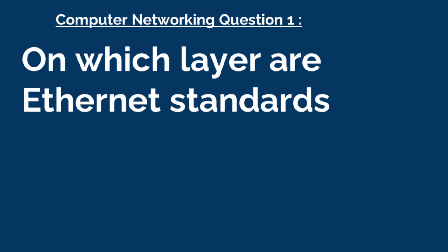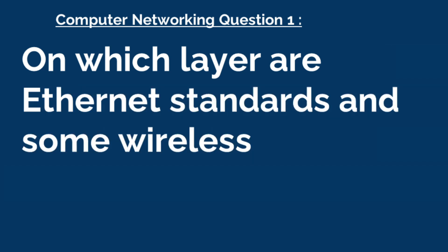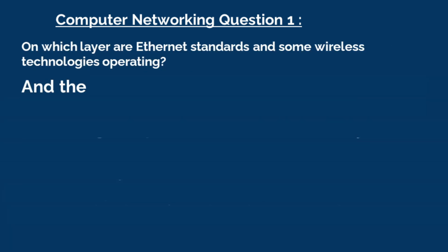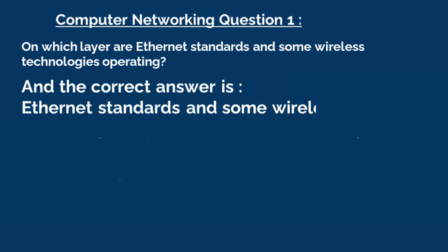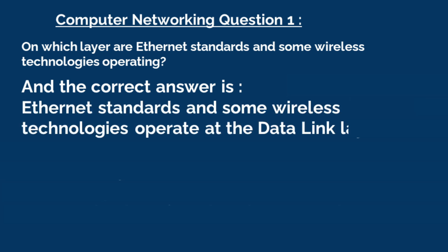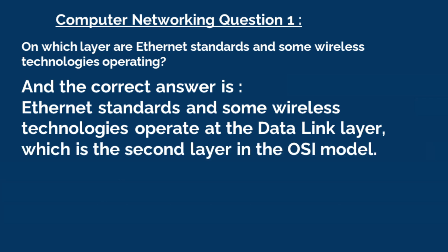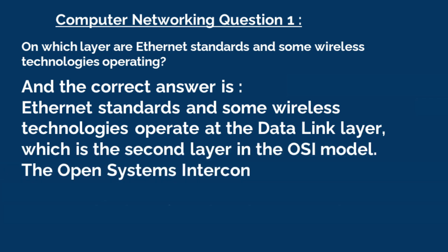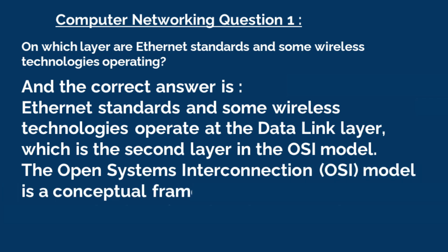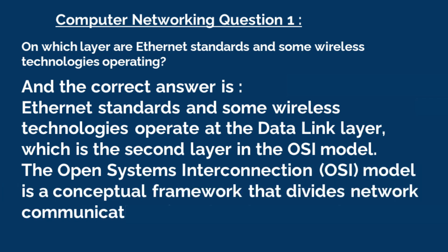Question 1: On which layer are Ethernet standards and some wireless technologies operating? The correct answer is, Ethernet standards and some wireless technologies operate at the data link layer, which is the second layer in the OSI model. The Open Systems Interconnection model is a conceptual framework that divides network communications functions into seven layers.